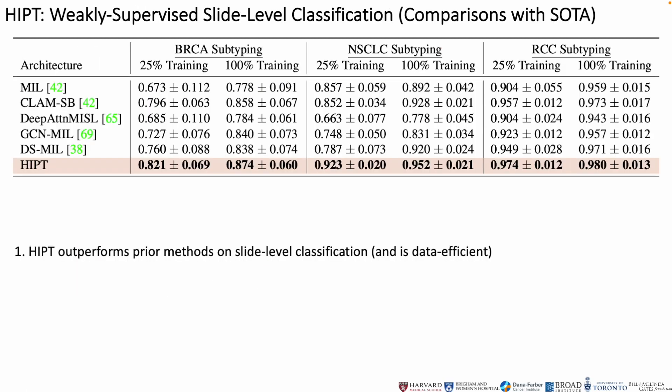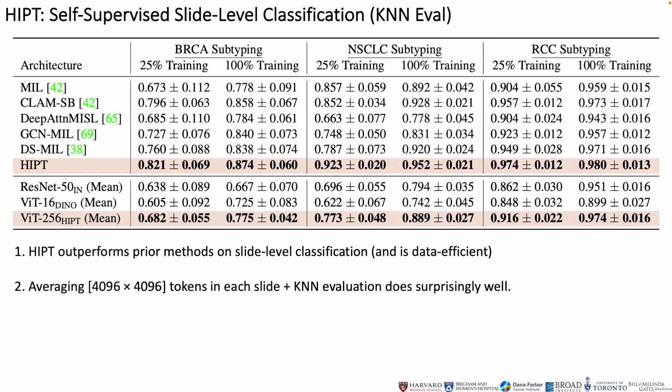We first compare HIPT against comparable MIL architectures on cancer subtyping tasks in the TCGA, and note that HIPT outperforms all prior methods across varying percentage folds of training data. Furthermore, we explore the self-supervised performance of HIPT, taking the mean 4K feature as the slide-level feature representation. We report that on RCC subtyping, self-supervised HIPT features outperform methods such as CLAM and DSMIL, which use slide labels.